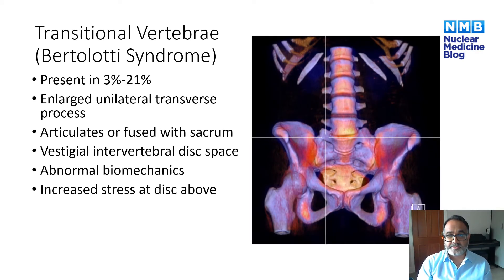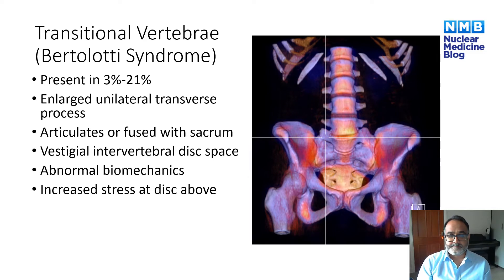An important normal variant to look out for when reporting SPECT scans of the lumbar sacral spine is the transitional lumbar sacral segment, which can lead to so-called Bertolotti syndrome. This is present in 3 to 21% of people and can range from an enlarged unilateral transverse process to articulations that are partially or fully fused with the sacrum. Often there may be a vestigial intervertebral disc space, and these are important because they can lead to altered biomechanics — a fused lumbar sacral segment may increase stress at the disc level above.